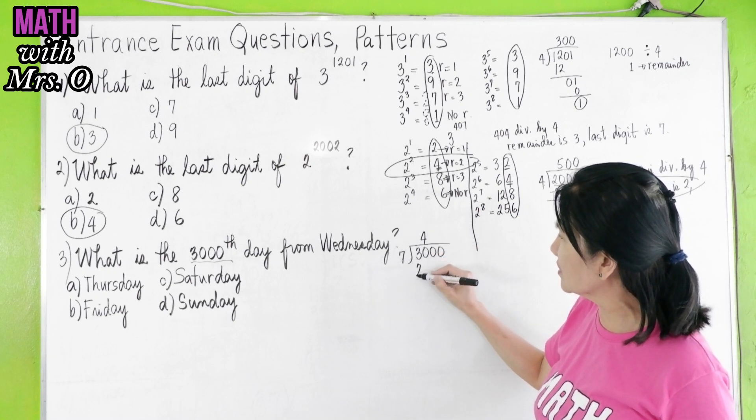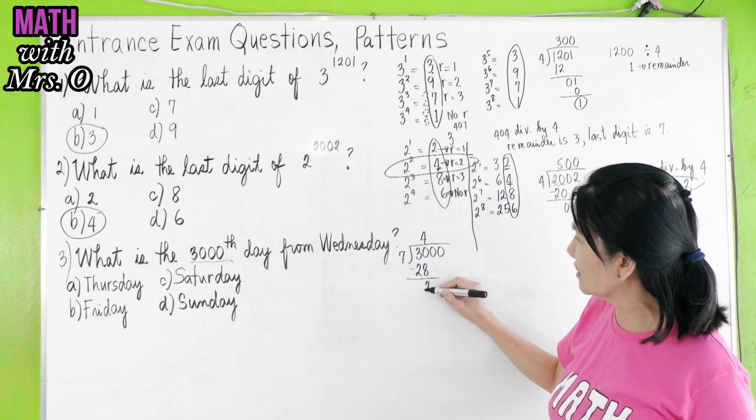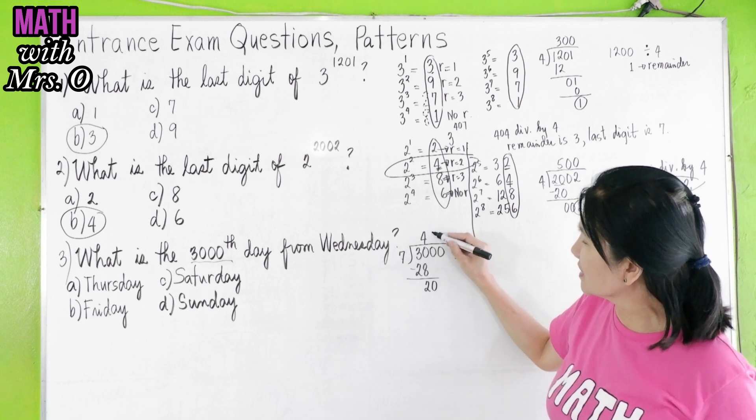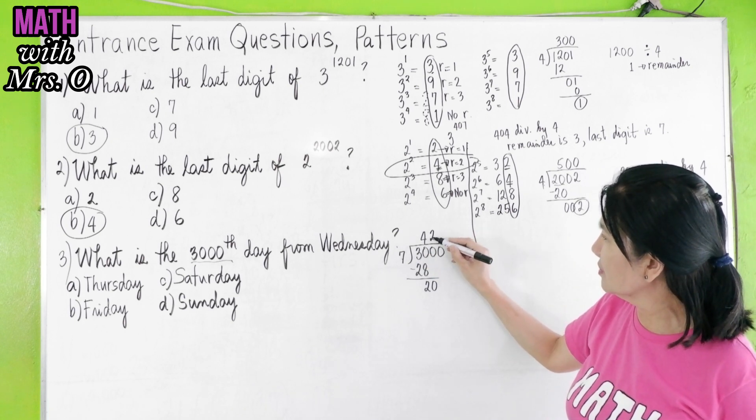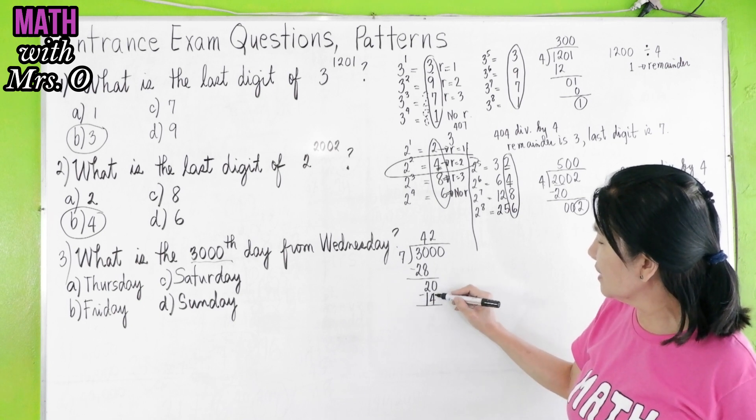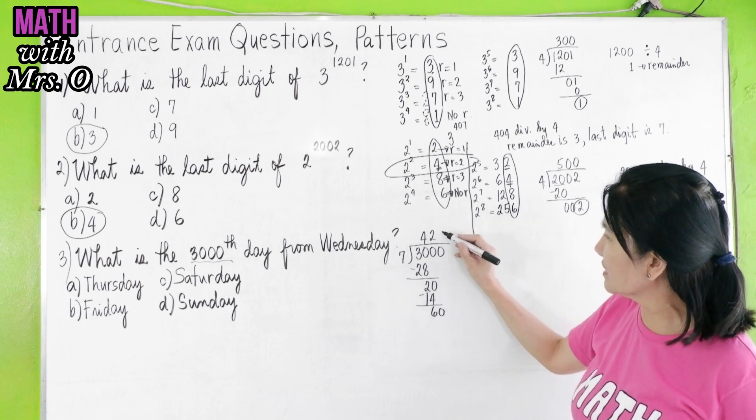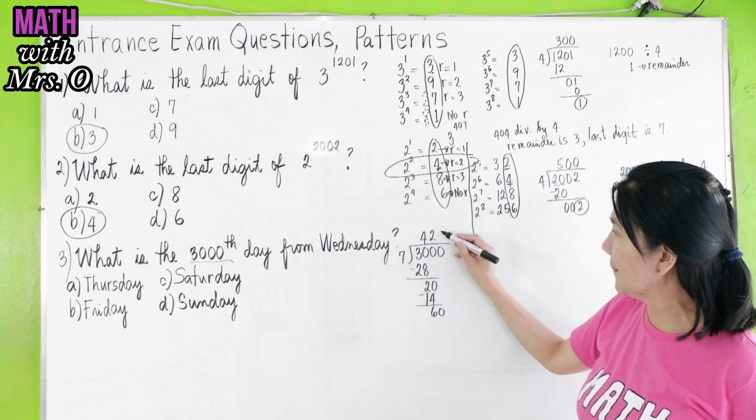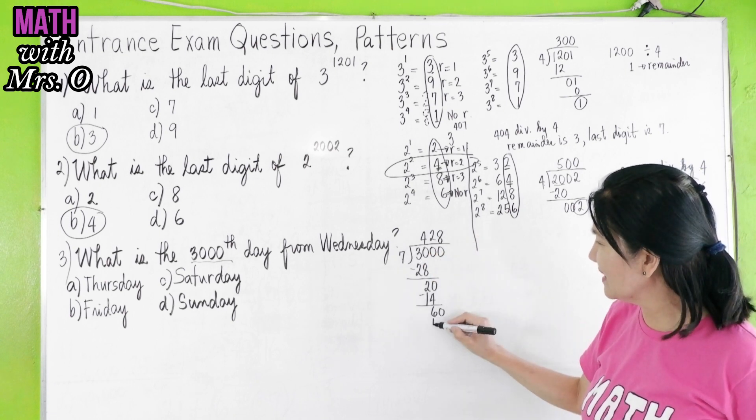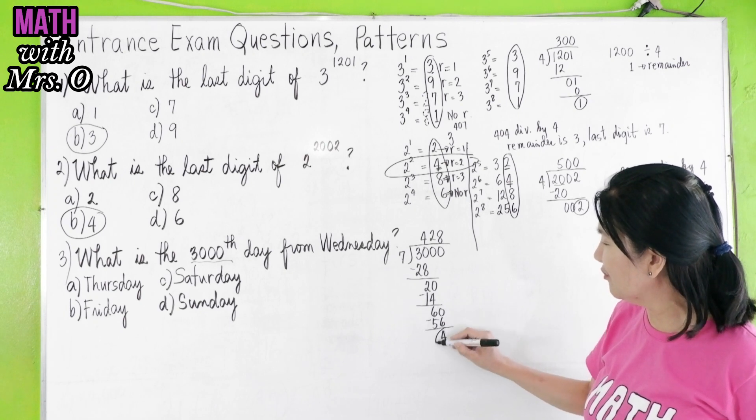30 divided by 7 gives us 4. 4 times 7 is 28. 30 minus 28 is 2. Bring down 0. 20 divided by 7 is 2. 2 times 7, that is 14. 20 minus 14 is 6. Bring down 0. 60 divided by 7, what's the nearest number? 8. 8 times 7 is 56. You have a remainder of 4.